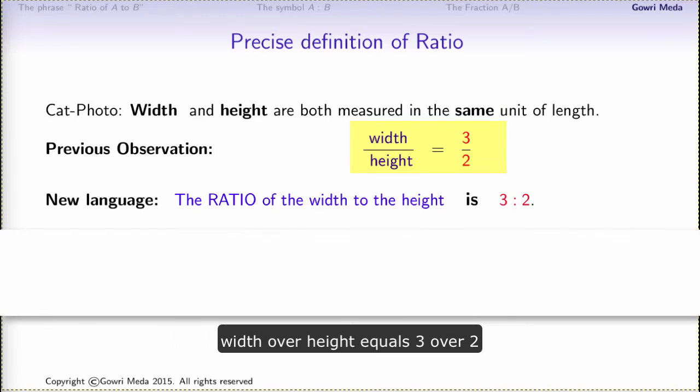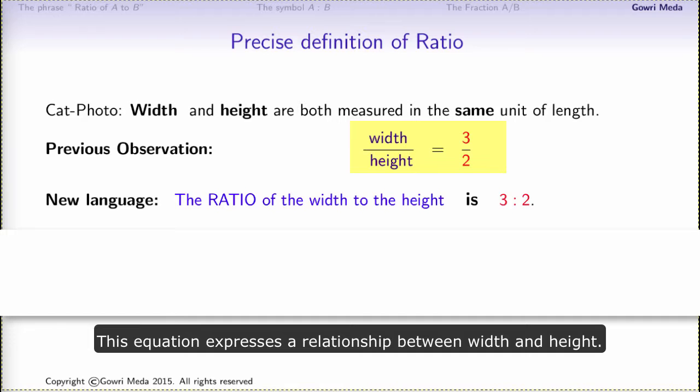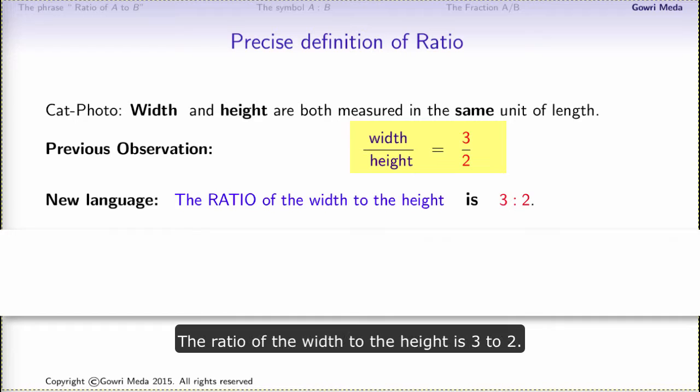On the last slide we had this equation: width over height equals 3 over 2. This equation expresses a relationship between width and height. Now I wish to teach you a new language to say this exact same information. Here is the new language: the ratio of the width to the height is 3 to 2.